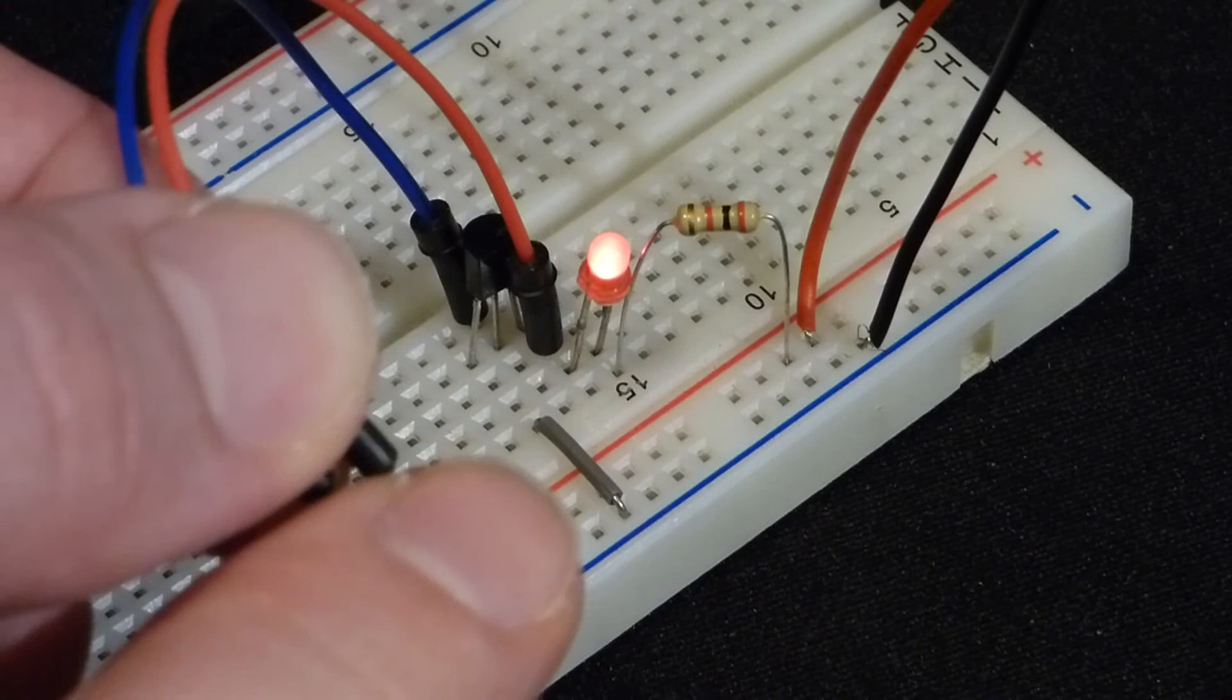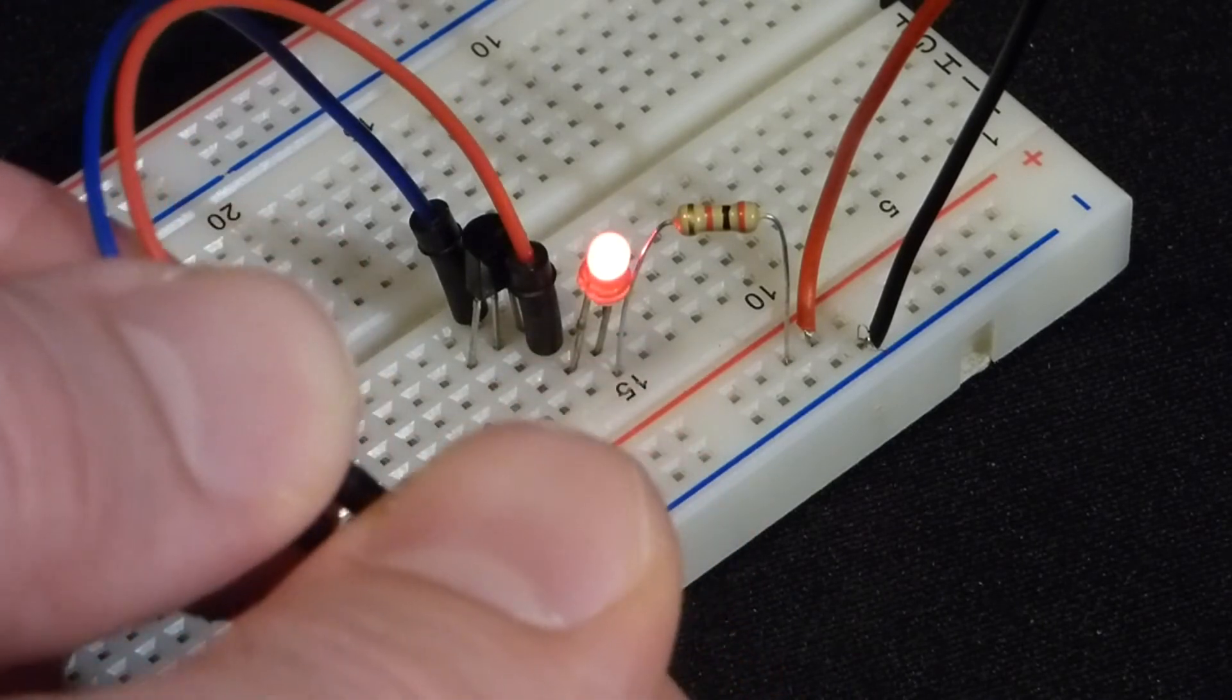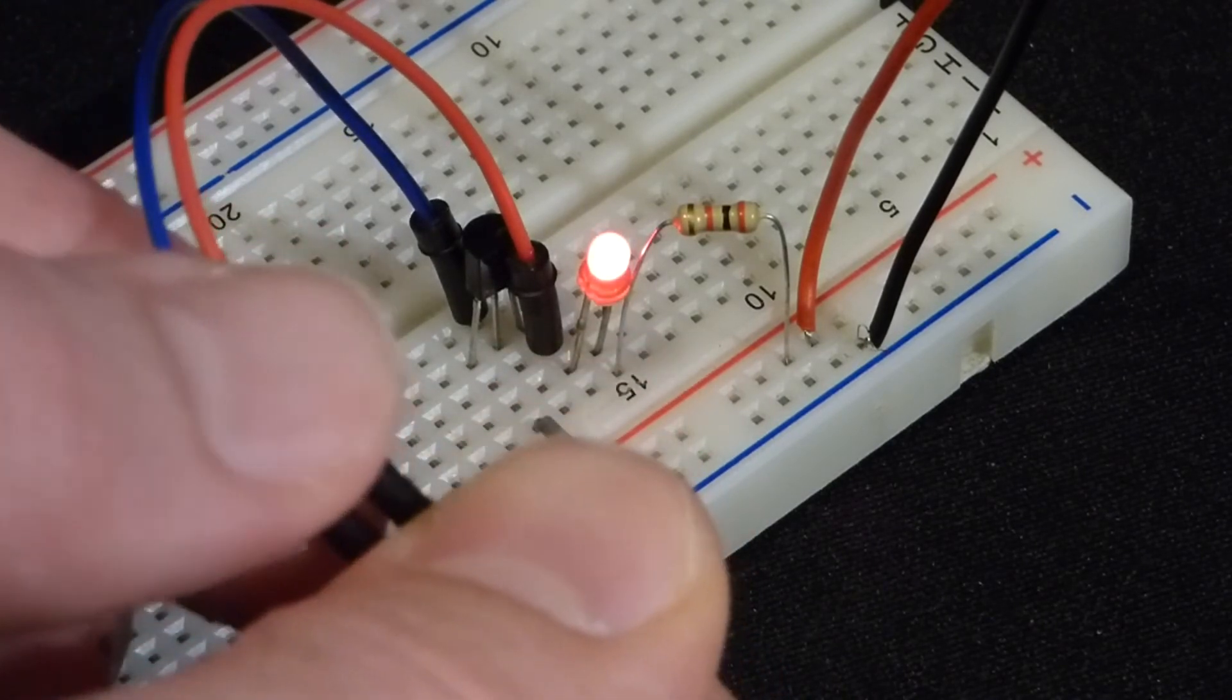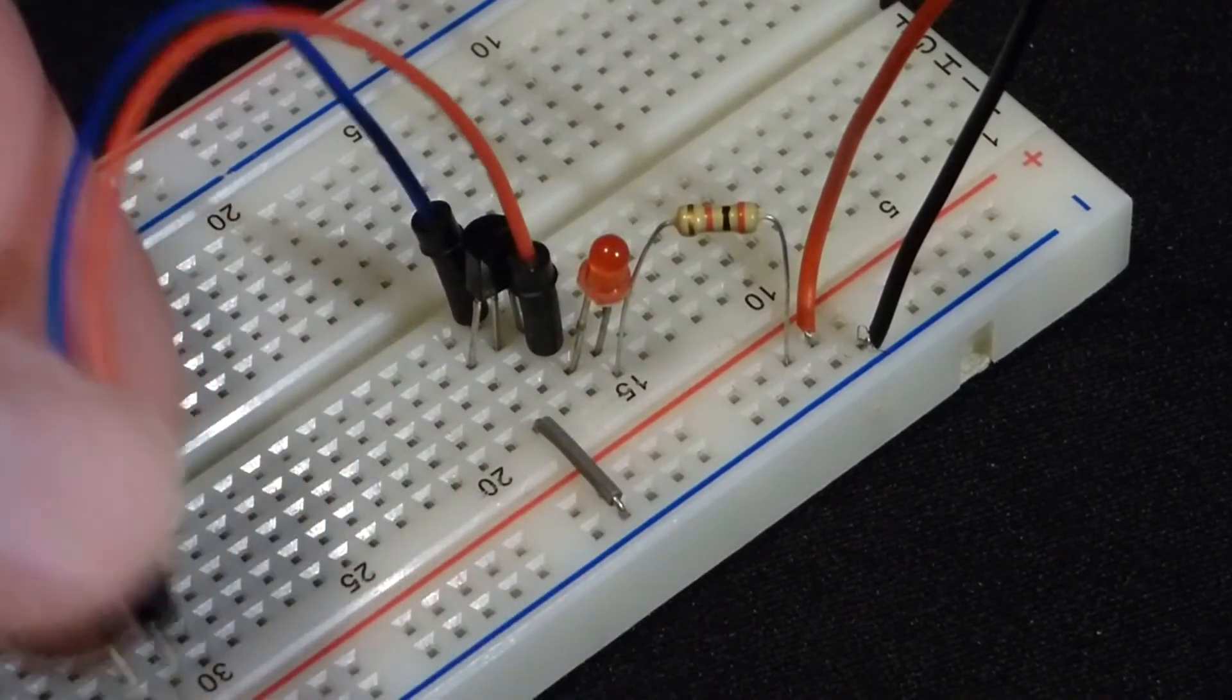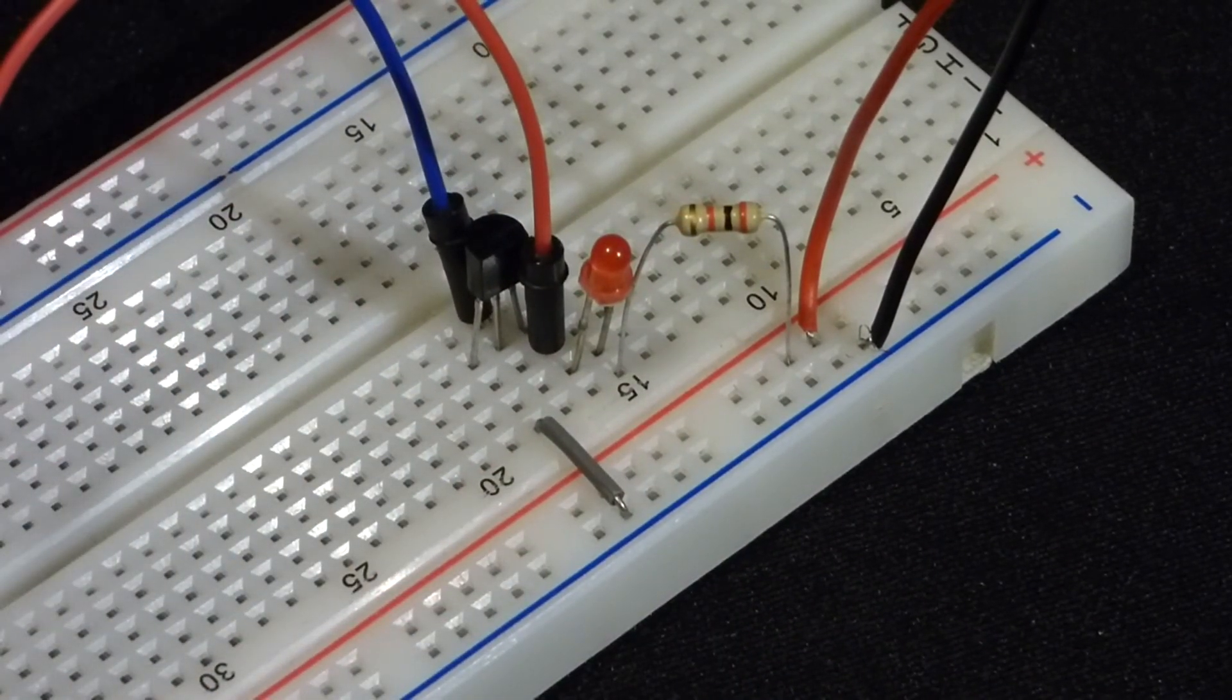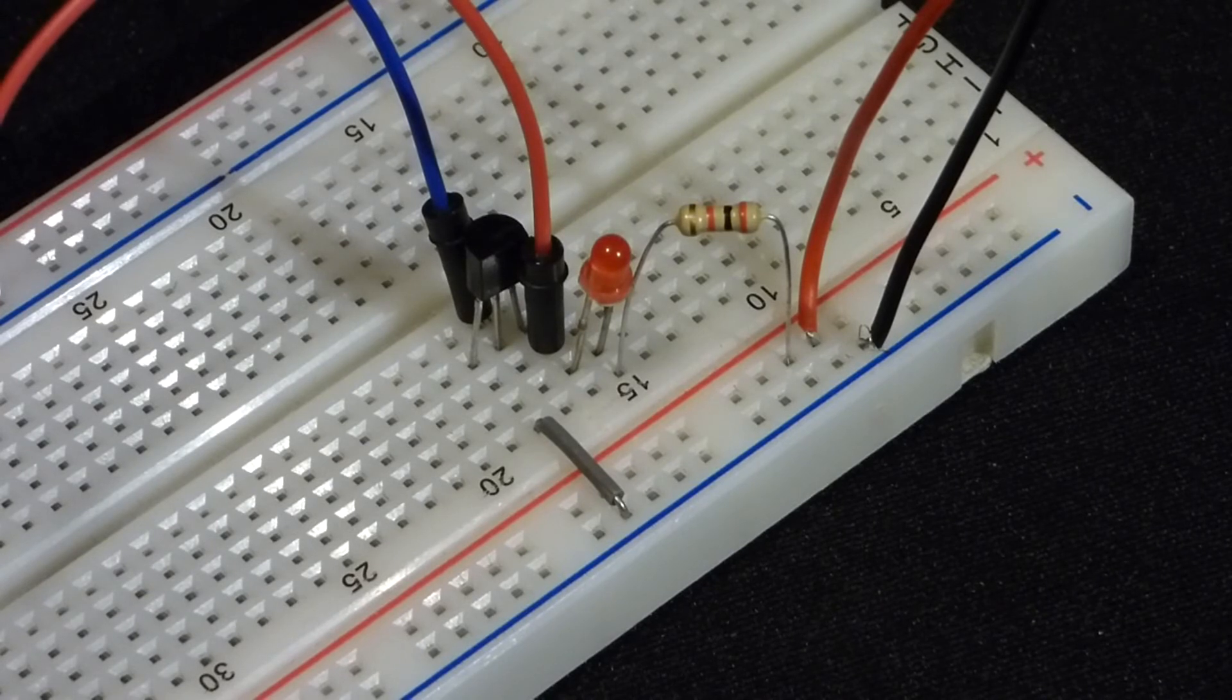But you'll notice the more surface area you got touching it the more conduction you got, the less resistance you're dealing with. But in any case this is a real simple circuit, but you learn quite a bit about a transistor.